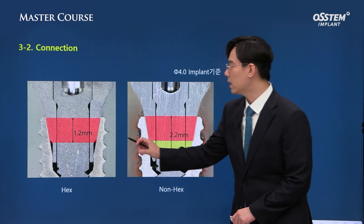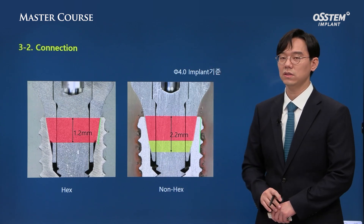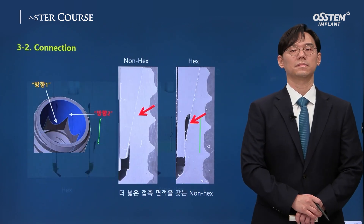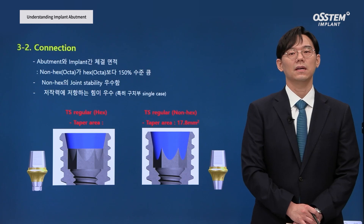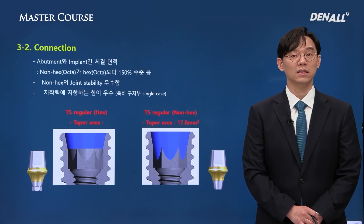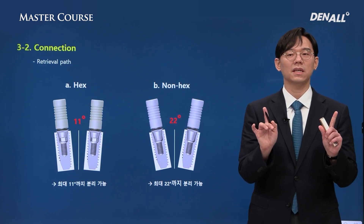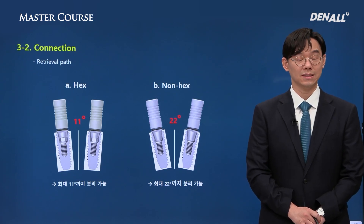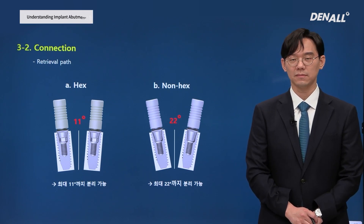If you look at the cross-section of hex and non-hex, the contact surface is longer for non-hex. For a 4.0 diameter implant, the contact length is 1.2 mm for hex and 2.2 mm for non-hex — a much more significant contact length. Accordingly, non-hex has about 50% more contact surface compared with hex, providing more resistance against occlusal force. When splinting two implants, hex abutment allows 11 degrees of implant divergence whereas non-hex allows 22 degrees, making non-hex easier to repair.